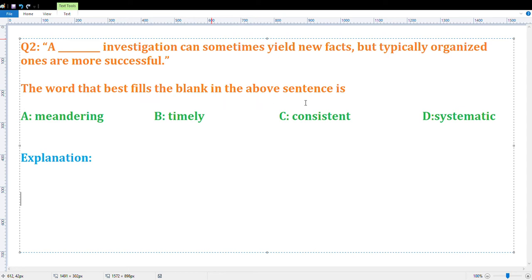There are four options: meandering, timely, consistent, and systematic. First, we need to know the meaning of those options.